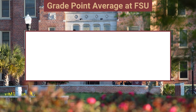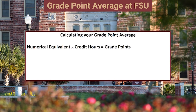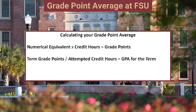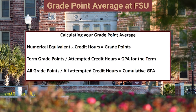In summary: the numerical equivalent multiplied by the credit hours equals grade points. Term grade points divided by all attempted credit hours equals your GPA for the term, and all grade points divided by all attempted credit hours equals the student's cumulative or overall GPA.